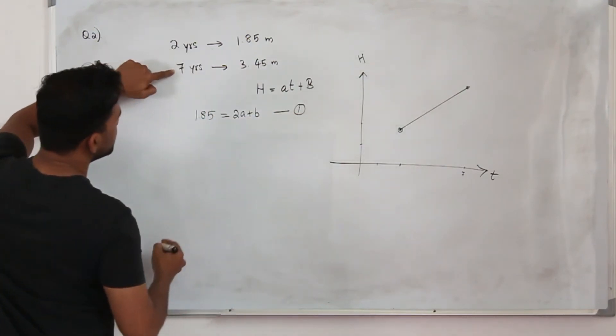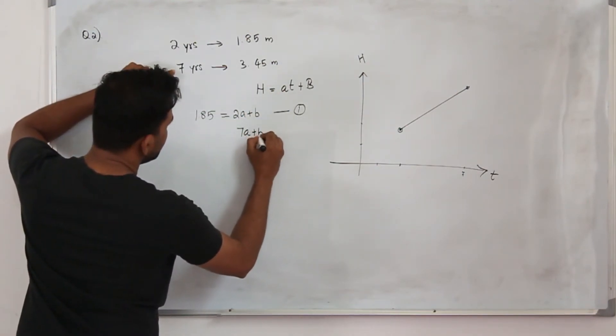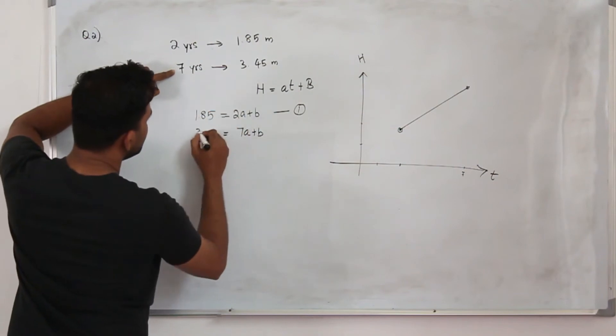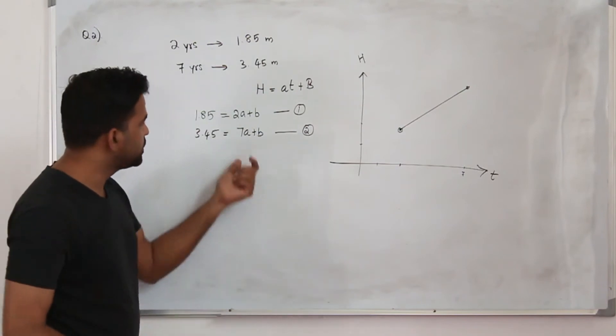When you substitute the second one, seven years, so 7a plus b equals H, 3.45. Now solve this simultaneous equation, you can get the value of a and b.